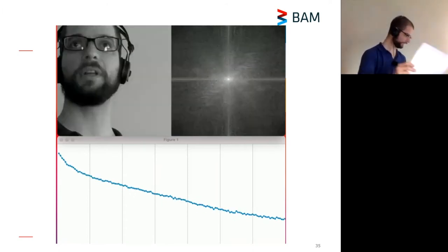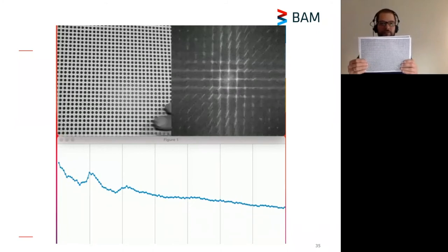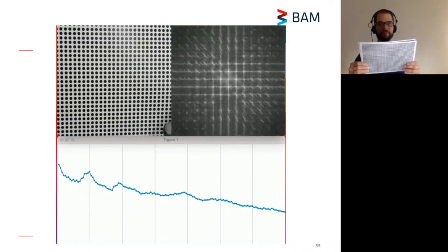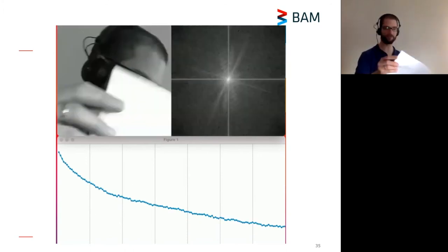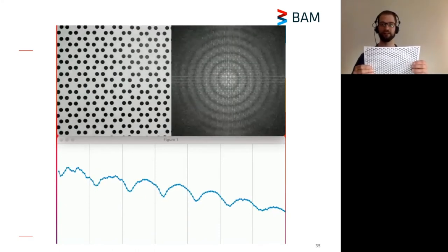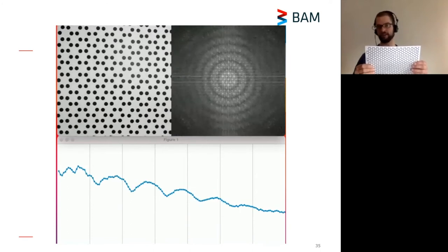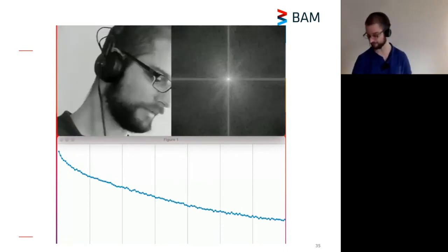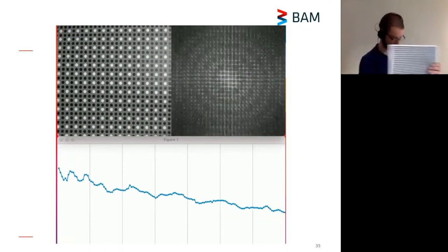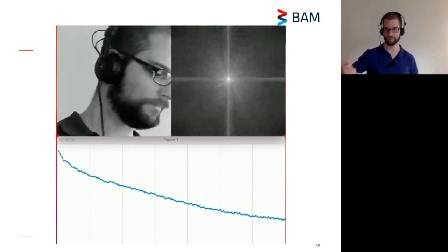X-ray diffraction is what you get when you have a regular structure of objects — that's when you get diffraction peaks to show up. For hexagonal arrays, superimposed on the basic diffraction spots you still see oscillating fringes — that is your form factor, which in x-ray diffraction is an atomic form factor. You can download this visualization program for free; I made it open source. You can play around with it or use it in your presentations.